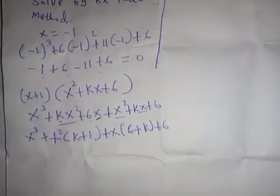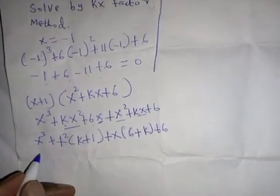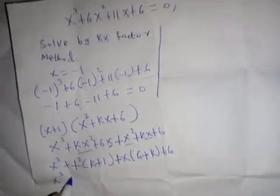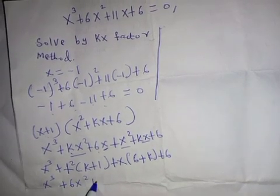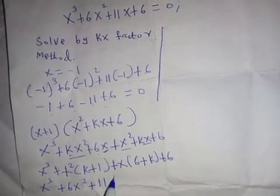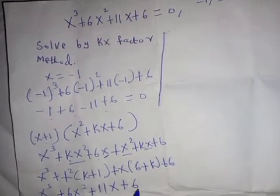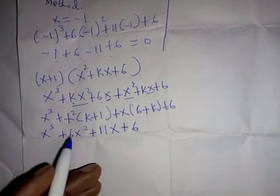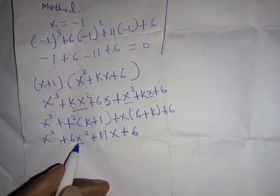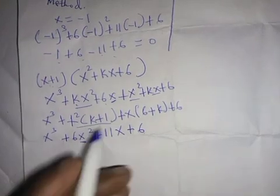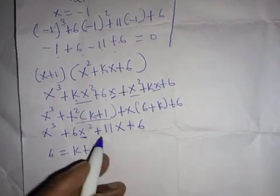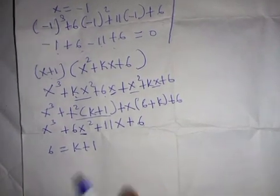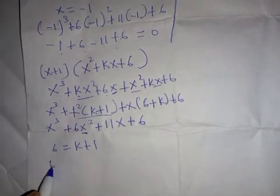We compare this with the original equation: x cubed plus six x squared plus eleven x plus six. Comparing the coefficient of x squared, six equals k plus one. So k equals six minus one, which gives us k equals five.